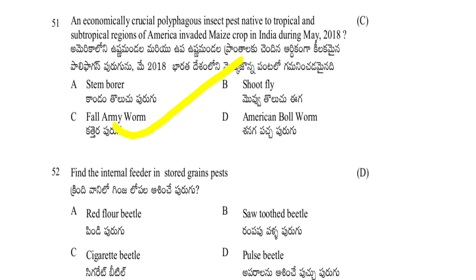Find the internal feeder among stored grain pests. We have internal feeders and external feeders. Options: red flour beetle, sawtooth beetle, cigarette beetle, pulse beetle. The answer is pulse beetle. Sawtooth, red flour, and cigarette beetles are external feeders, not internal feeders.